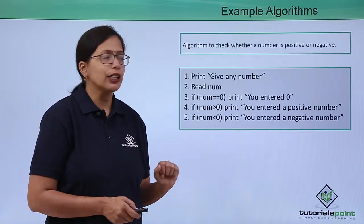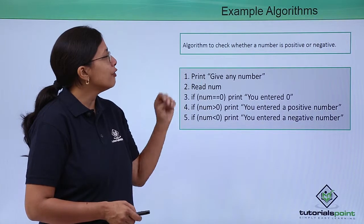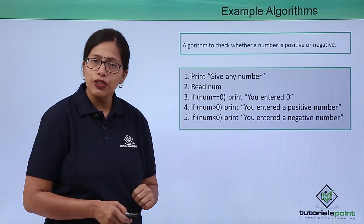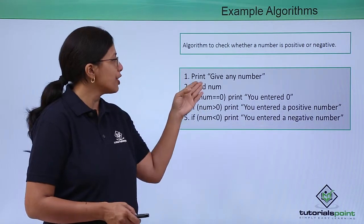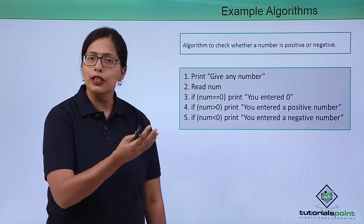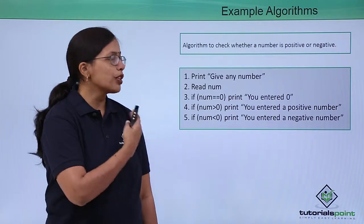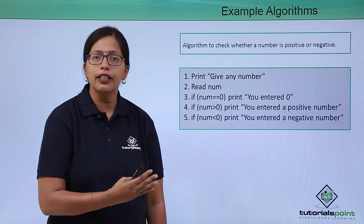Let's take another small algorithm, a mathematical algorithm. This algorithm will check whether a number is positive or negative. First thing, print 'Give any number.' You are asking the user for the number. The user has entered the number, you have read it.